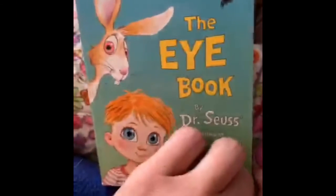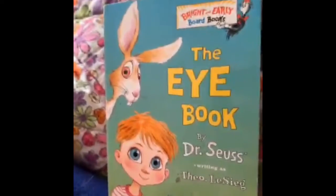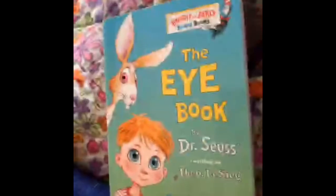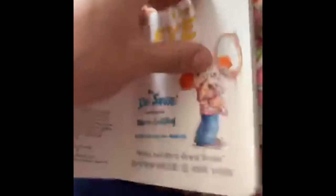Can't wait to see what you guys do. The Eye Book by Dr. Seuss writing as Theo Le Sieg. Who should we do Illustrated? Illustrated by Joe Mathiah. Illustrated means the person who drew the pictures. It's pretty important for this book because it's the Eye Book.